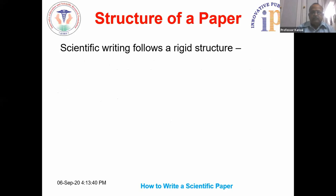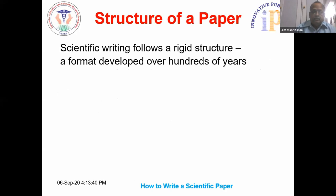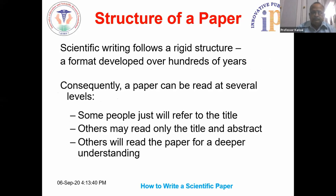Scientific writing follows a very rigid structure. The format has been developed over hundreds of years, so you cannot deviate from it. Consequently, a paper can be read at several levels — some people just read the title only, others read the title and the abstract, and very few will read the paper for a deeper understanding.